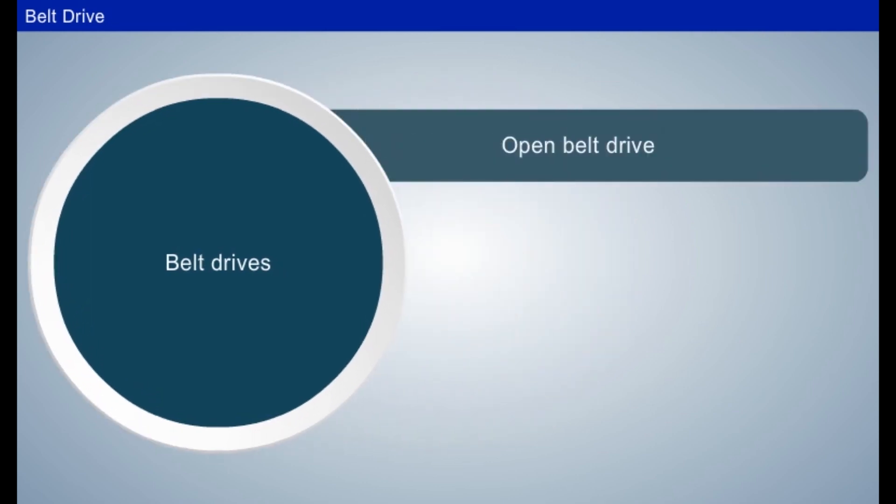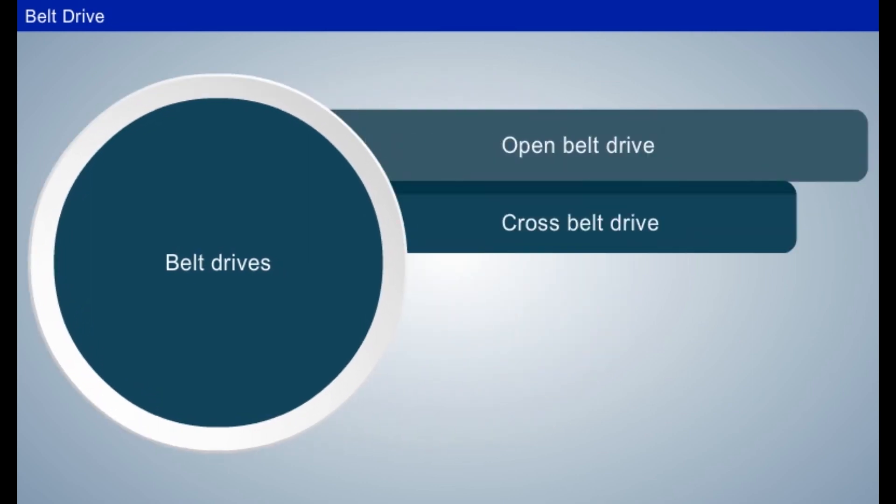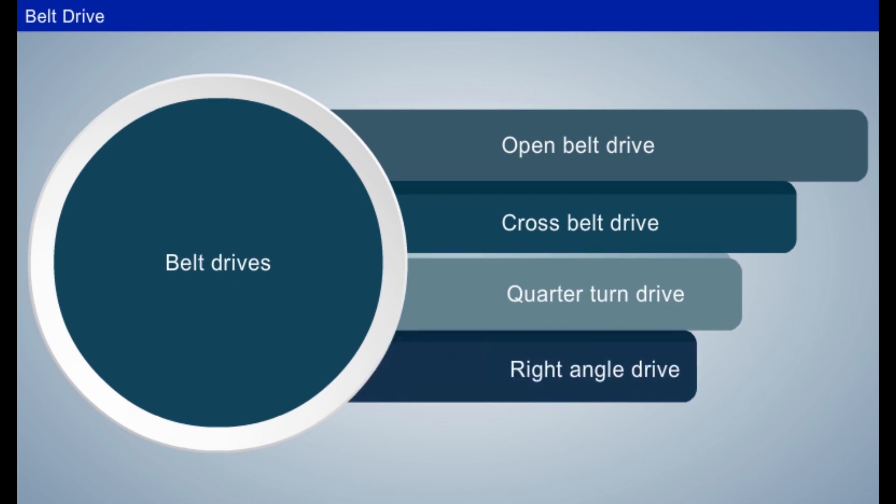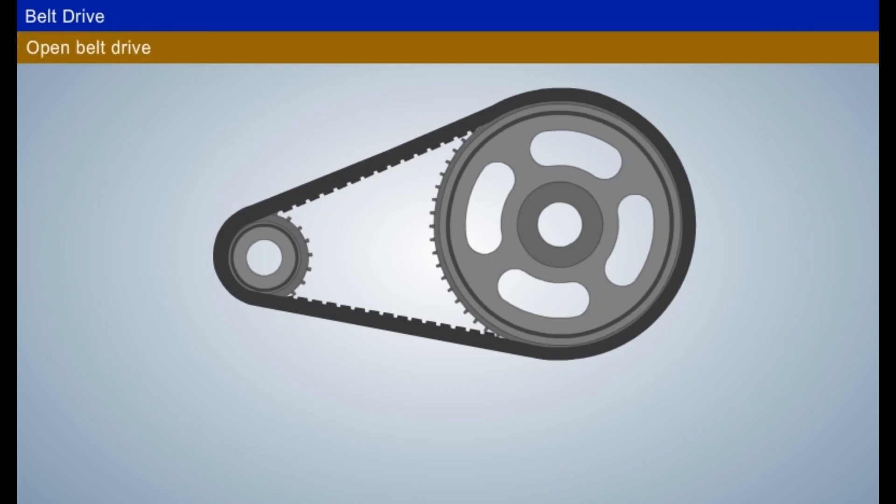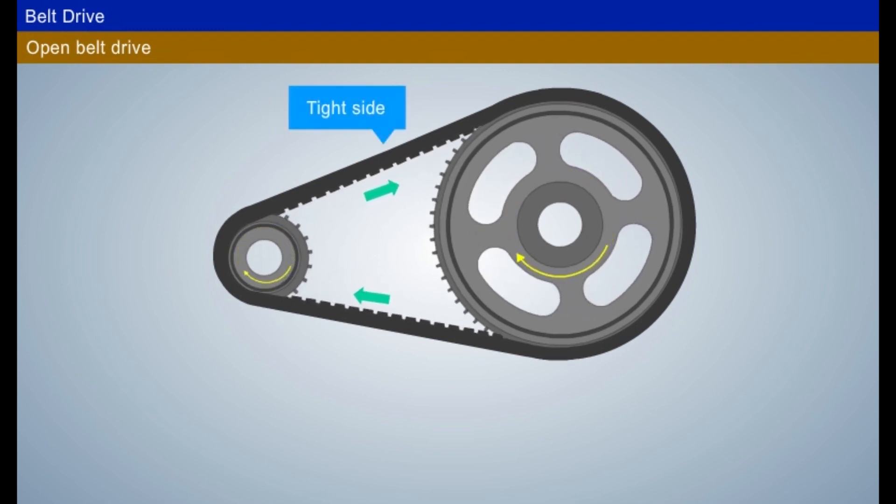They are: Open belt drive, Cross belt drive, Quarter turn drive, Right angle drive. Open belt drive: Two parallel shafts are connected by an open belt drive such that both the driver and follower shafts rotate in the same direction. It has two sides, namely tight side and slack side.